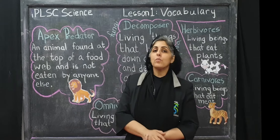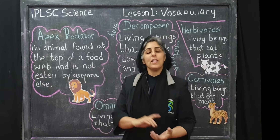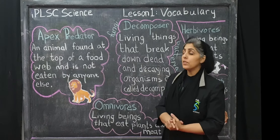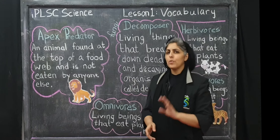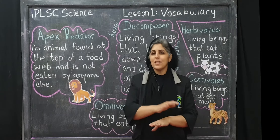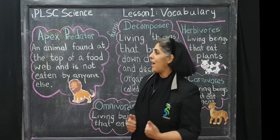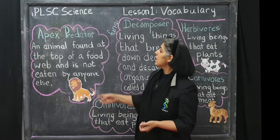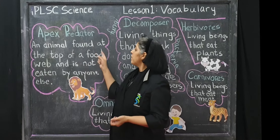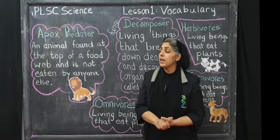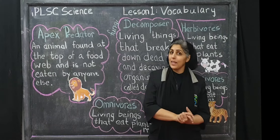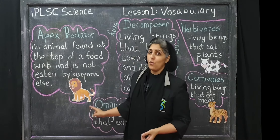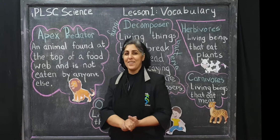Now we want to move on to the next set of vocabulary. The words that we have learned so far, apart from the ones we did just a few minutes back, are apex predator. So what is an apex predator? An animal found at the top of a food web that is not eaten by anyone else — namely a lion.